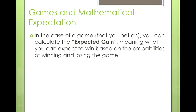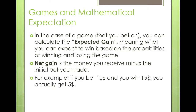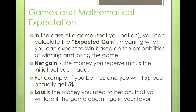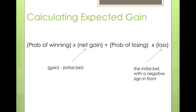In the case of a game you bet on, you can calculate the expected gain — what you can expect to win based on the probabilities of winning and losing. Net gain is the money you receive minus the initial bet; for example, if you bet $10 and win $15, your net gain is $5. Loss is the money you bet that you lose if the game doesn't go in your favor. The formula is: probability of winning × net gain + probability of losing × loss, where net gain equals your winnings minus the initial bet, and loss is the negative of your initial bet.